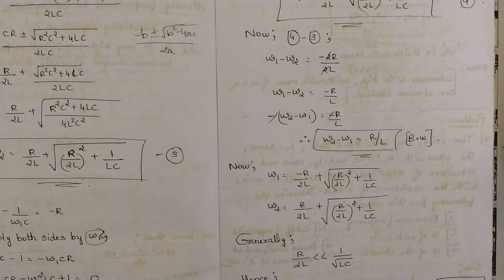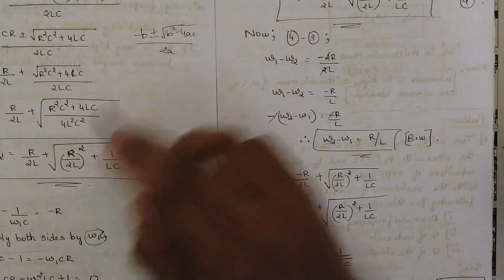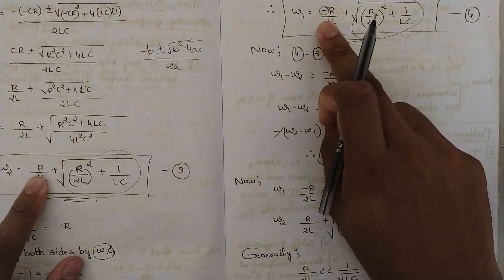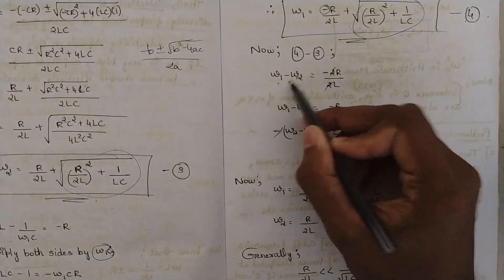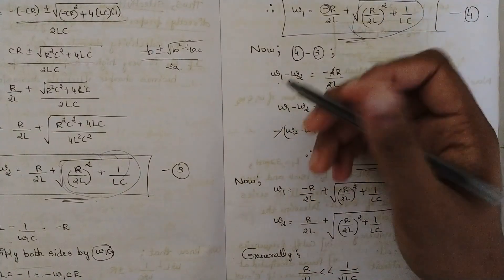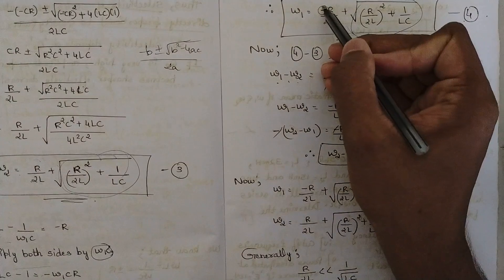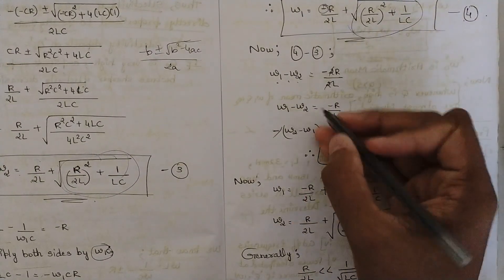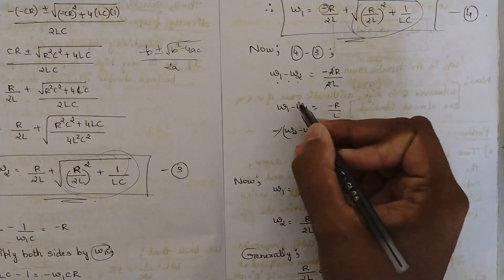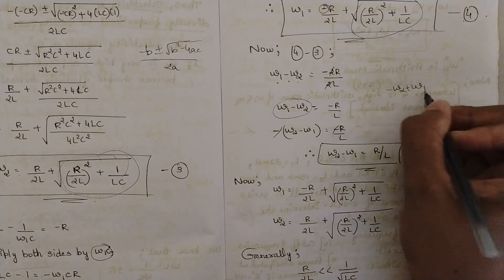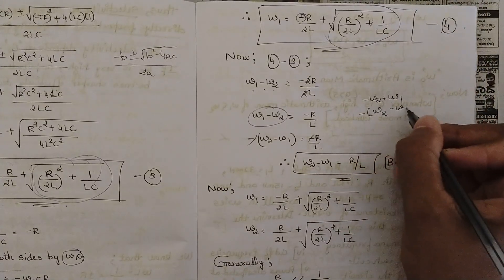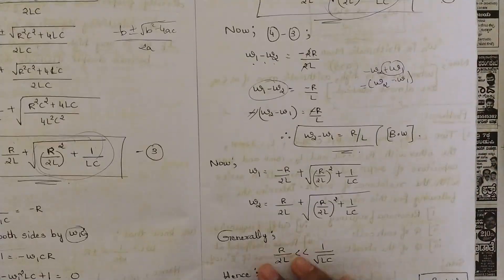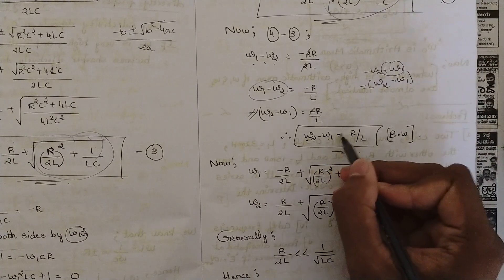Now I subtract equation 4 from equation 3 to eliminate the square root terms and keep only the R terms. ω1 minus ω2: the square root parts cancel, and we are left with minus 2R/2L. Rearranging, taking minus common: minus(ω2 minus ω1) equals −R/L, so the final expression is ω2 minus ω1 equals R/L. This is the bandwidth, proved using the quadratic equation approach — the difference of the half power frequencies equals R/L.